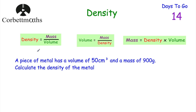We've got a piece of metal with a volume of 50 centimetres cubed and a mass of 900 grams, and we've been asked to calculate the density of the metal. We know the mass is 900 grams and the volume is 50 centimetres cubed. To find the density, we want to find how heavy 1 centimetre cubed would be, so we take 900 grams and divide it by 50.